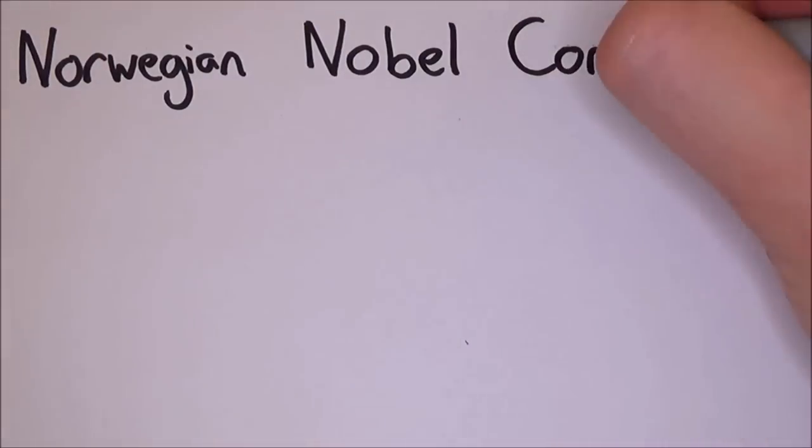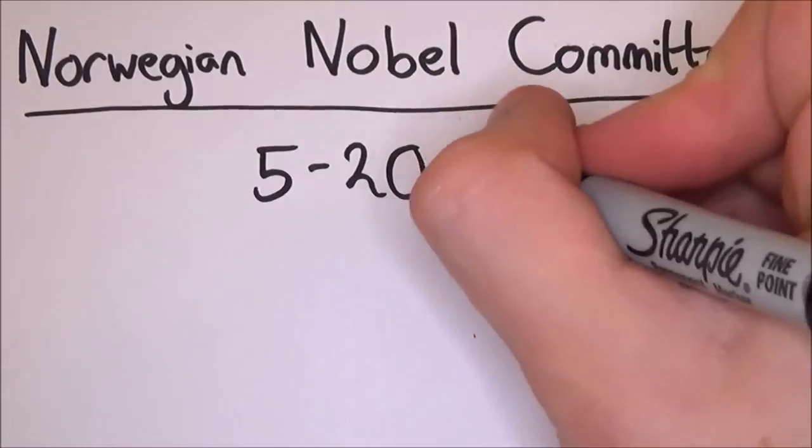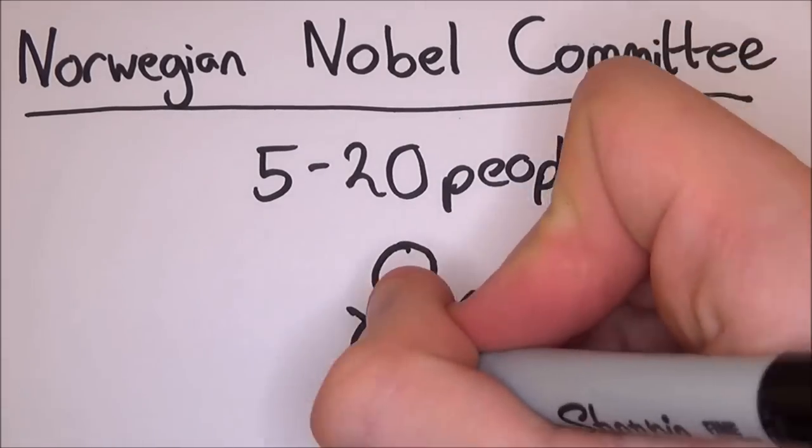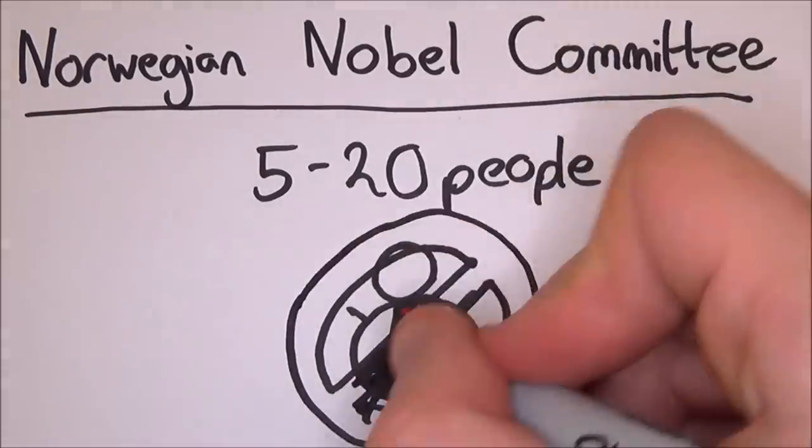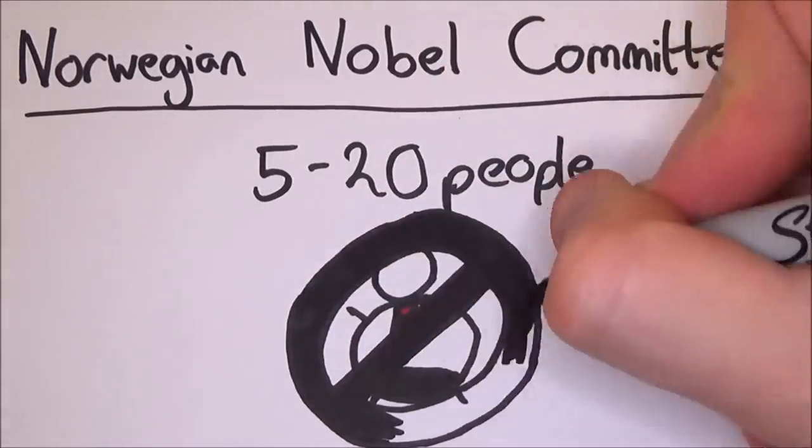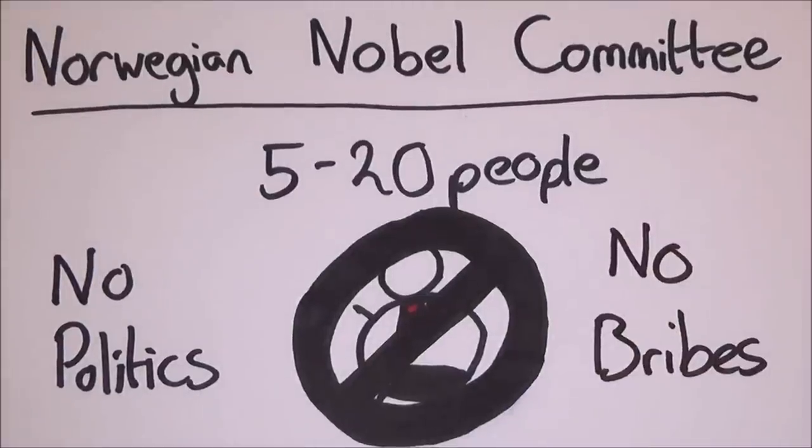If you get nominated, the Norwegian Nobel Committee will create a shortlist of 5 to 20 people in each category. Now, it is completely out of your hand. The committee isn't allowed to have anyone from politics in it, because it might sway the judgement due to political circumstance, so you can't even bribe your way in.